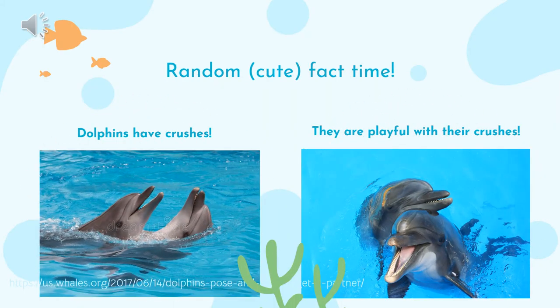Time for some random facts. First, dolphins are very loving toward each other and will often chase each other around and nibble on their crush to profess their love. Second, they are also very playful — they will give their crushes heart eyes and lie on their sides when they are in love.